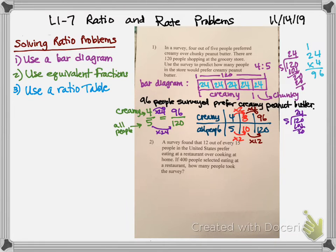So I'm not going to do all three strategies every single time because I think that's going to take too long. So let's just work on this next one. A survey found that 12 out of every 15 people in the U.S. prefer eating at a restaurant over cooking at home. If 400 people selected eating at a restaurant, how many people took the survey?